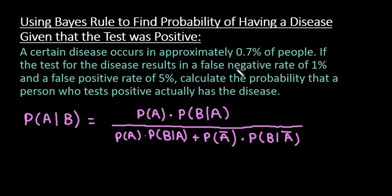For this video, what I want to do is show you how to use Bayes' rule to find the probability of having a disease given that the test was positive.